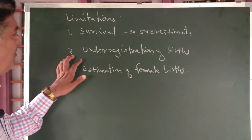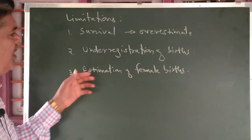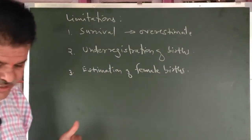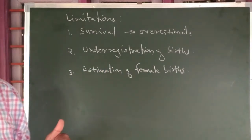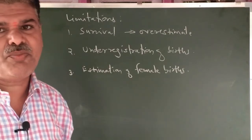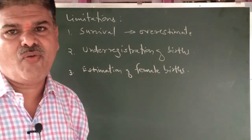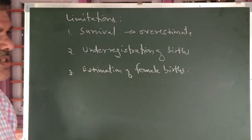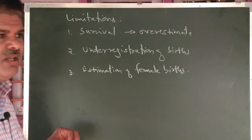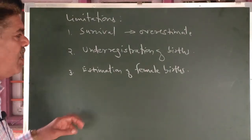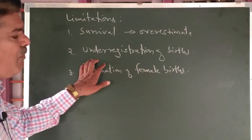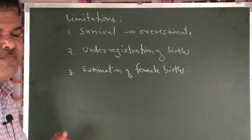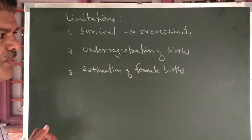Another limitation is the under-registration of births. In India, there is a serious problem of registration of births — some registrations have not taken place. So therefore, under-registration of births is one more limitation of Gross Reproduction Rate.